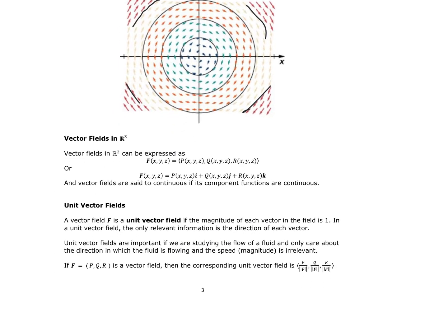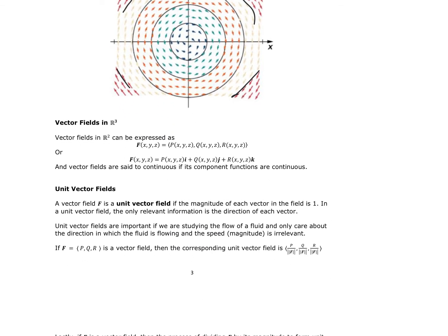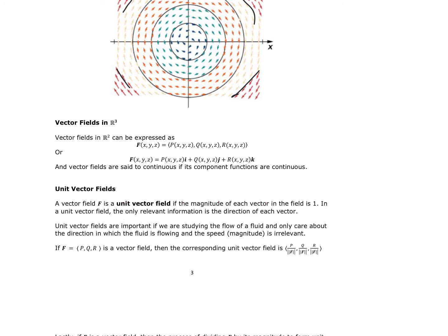Vectors in R3 can be expressed in two ways: either as the vector field F(x,y,z) = (P(x,y,z), Q(x,y,z), R(x,y,z)), or in IJK component form. Again, it is said to be continuous if its component functions are continuous.